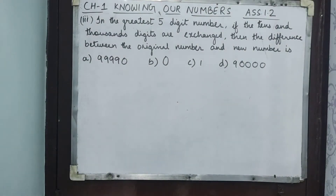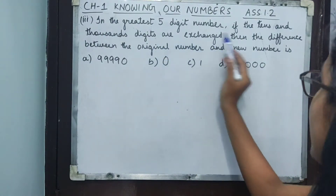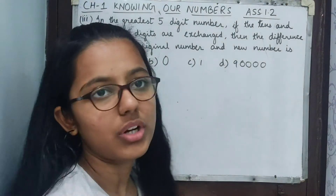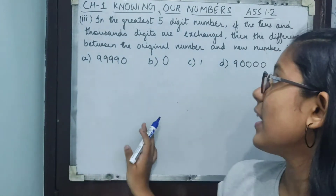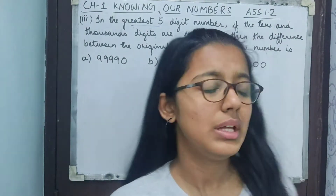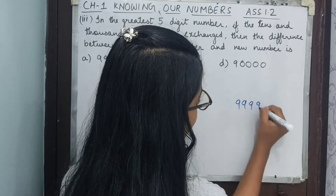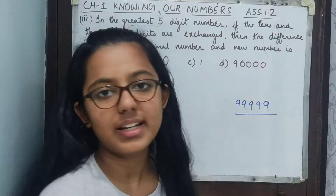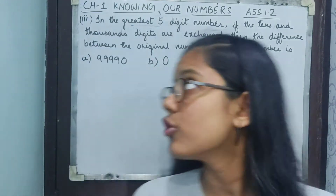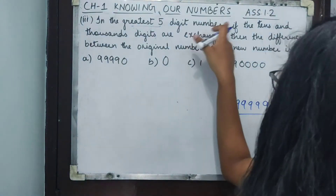The third part: in the greatest five-digit number, if the tens and thousands digits are exchanged, what is the difference between the original number and the new number? First we need to form the greatest five-digit number, which is 99999 — five nines.